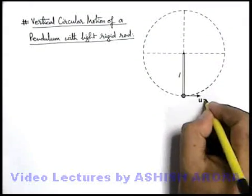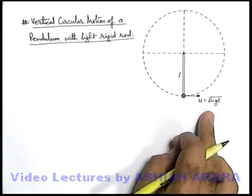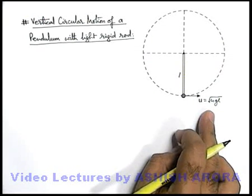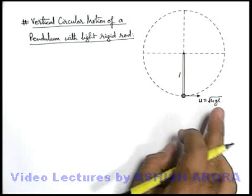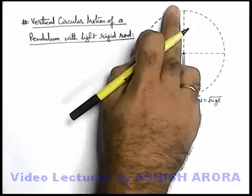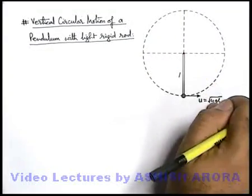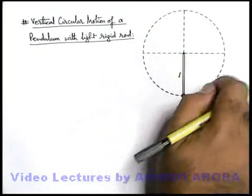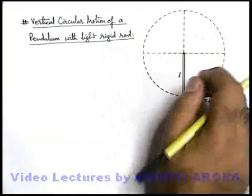Like we consider the case when u is equal to root 4gl, that we have already studied in case of a simple pendulum. In this situation if it is root 4gl, we have studied that this is the minimum required speed to take the bob to the topmost point if tension will support. Here we can say, in this situation, tension will never become zero and bob will be able to reach the top and finally it will fall and it may complete the circular motion.